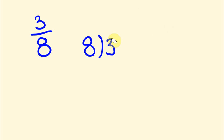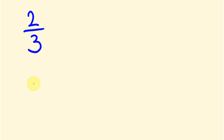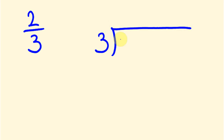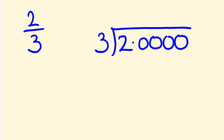Now let's look at an example where we don't get a terminating answer. Say we had something like 2/3. Again, you can think about this as being 2 divided by 3. We'll put the 3 there and we're going to divide it into 2, setting up decimal places to work with. 3 into 2 we can't do, so I'll put a 0 there and carry the 2 across.